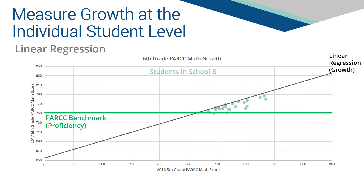The opposite is also possible. School B has all of its students above the proficiency benchmark, but all of its students below the linear regression growth model. Under the new accountability framework, School B would receive a high score for the 25% of the accountability framework that deals with proficiency, but a low score for 50% of the accountability framework that deals with growth.